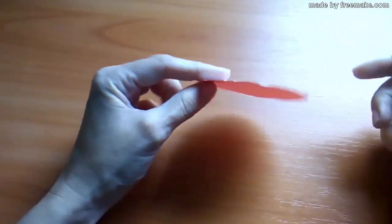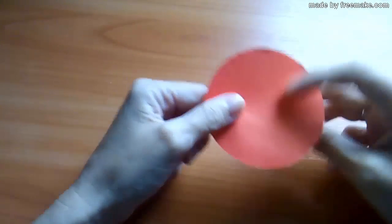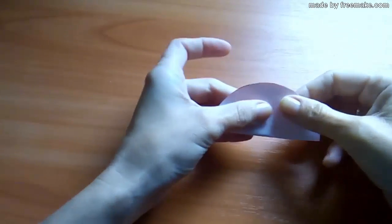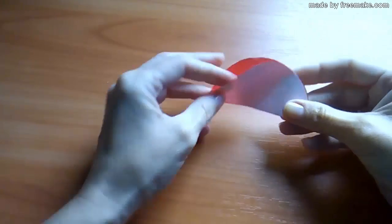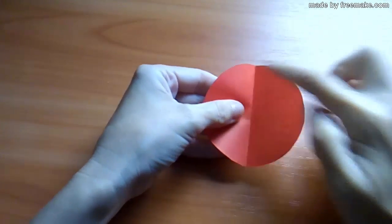Now let's make a petal for the flower. For one petal we need one circle. Fold the circle in half. Unfold. And again fold in half. Point to point.